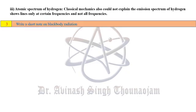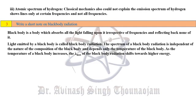Write a short note on black body radiation. A black body is a body which absorbs all the light falling upon it at all frequencies and does not reflect any of it. The light emitted by a black body is called black body radiation. The spectrum is independent of the nature or composition of the black body and depends only on its temperature. As the temperature increases, lambda-max of the black body radiation shifts towards higher energy, where lambda-max is the wavelength at which maximum light is emitted.